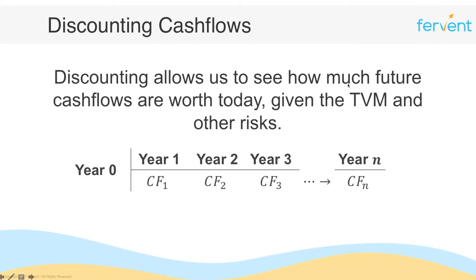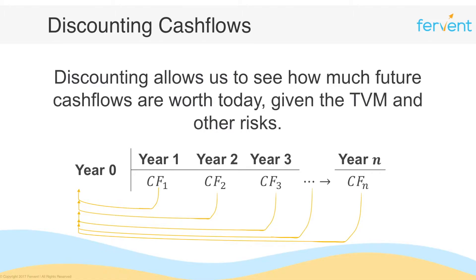Given the time value of money, we know that the first cash flow will be worth more than the second, because money loses value over time. What we want to do is discount these cash flows to the present — bring cash flow one back to year zero, take cash flow two and discount it back to year zero, and do the same for all remaining cash flows up to the nth year. This exact same process applies when we're pricing bonds.